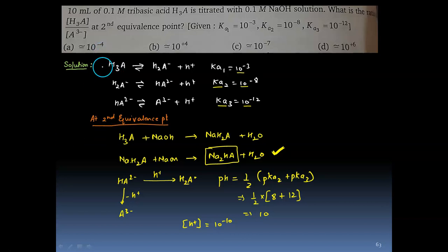So H3A is a tribasic acid. It will have dissociation constants Ka1, Ka2, and Ka3. If you were to write the overall reaction, H3A gives us A³⁻ plus 3H⁺.